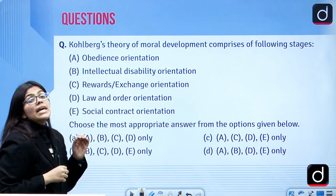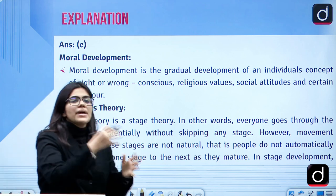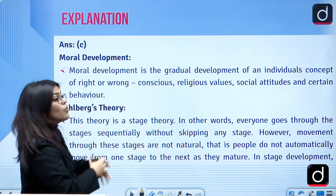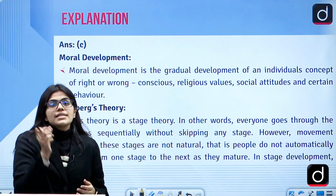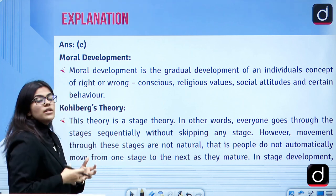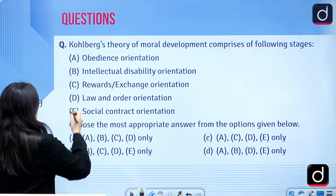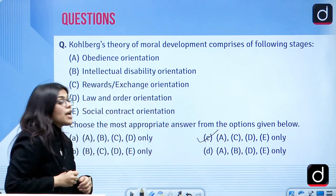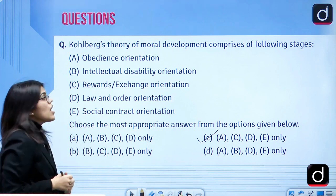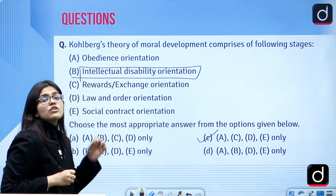Kohlberg gave the theory of moral development, and in 2022 they asked the same question about what is moral development and what are the stages of Kohlberg's moral development theory. The answer is C — that means A, C, D and E are the correct options. B is not correct because intellectual disability orientation is not something that Kohlberg talked about.